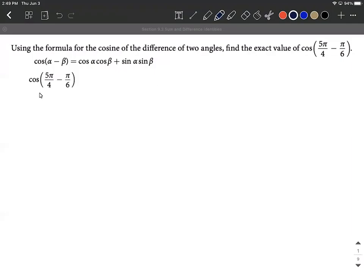Okay, our goal on this problem is we want to find the difference within a cosine. So we have two angles, 5π/4 minus π/6. These two angles are being subtracted inside of our cosine function. So what we're going to use is a difference formula.